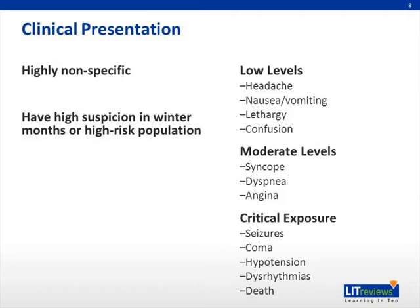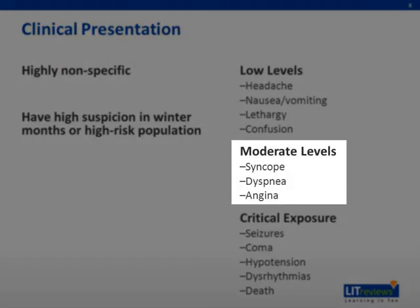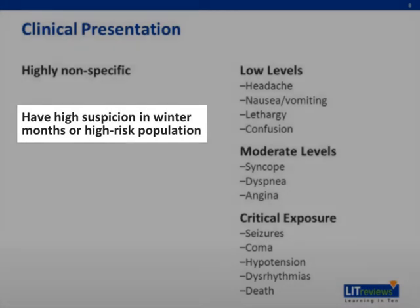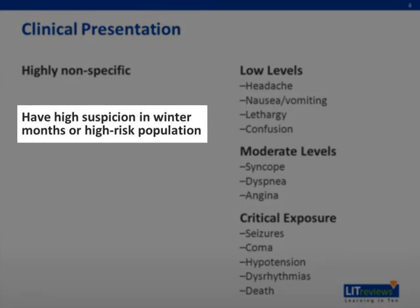The clinical presentation of carbon monoxide poisoning is very broad and nonspecific, ranging from headache, nausea, vomiting, and confusion to stupor and coma. The severity of the symptoms is associated with the exposure to carbon monoxide and the levels of carboxyhemoglobin in a patient's blood. At moderate levels of intoxication, patients can complain of syncope, dyspnea, or angina, and at critical exposures, seizures, coma, hypotension, dysrhythmias, or death may occur. Have a high suspicion for these nonspecific symptoms, especially in the winter months or in high-risk populations.